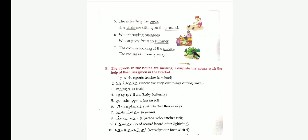Next exercise. The vowels in the nouns are missing. Complete the nouns with the help of clues given in the bracket. Sports teacher in the school. Answer: Coach. C-O-A-C-H. Coach. Second one. Where we keep our things during travel. Answer: Suitcase. S-U-I-T-C-A-S-E.